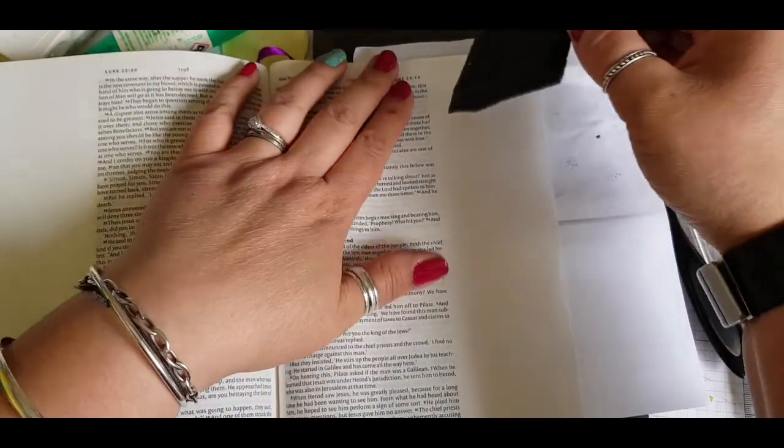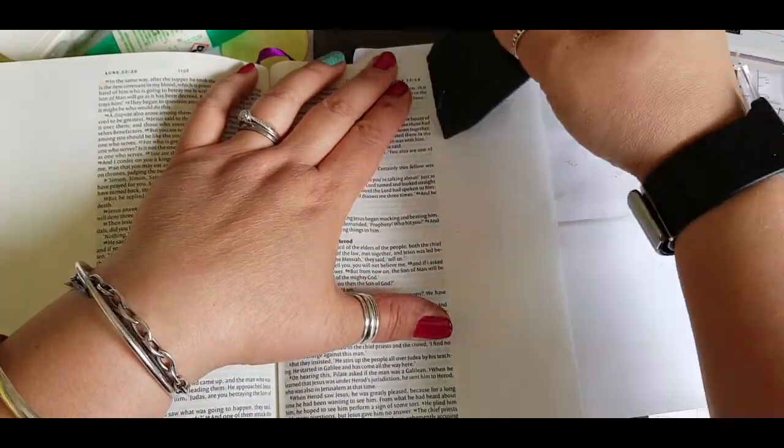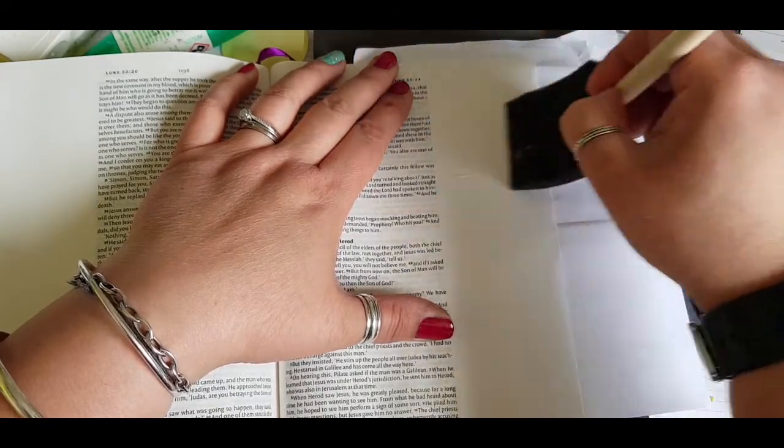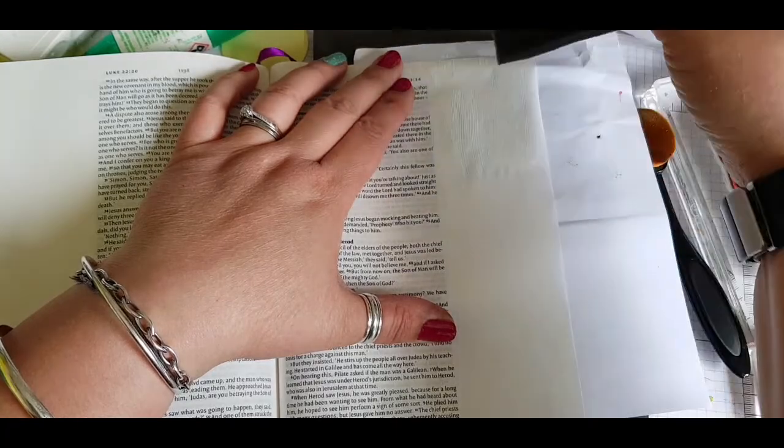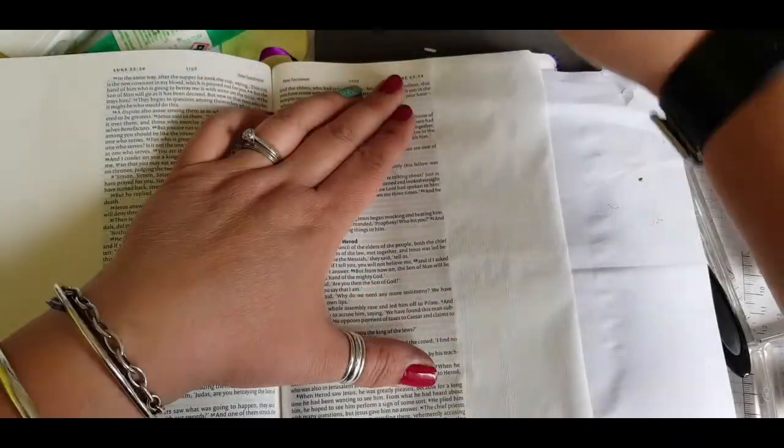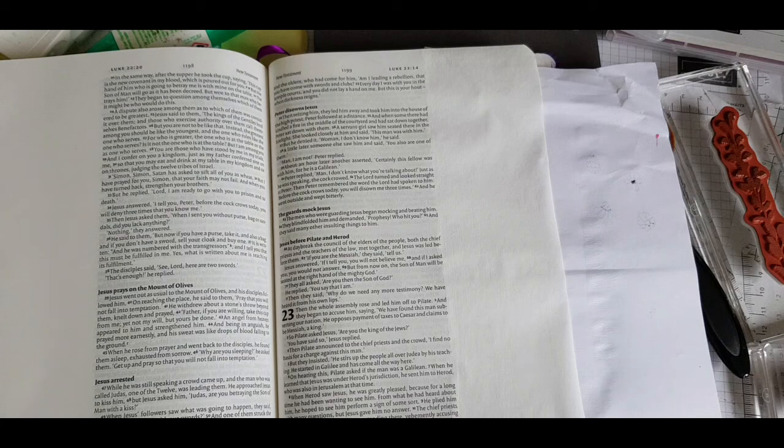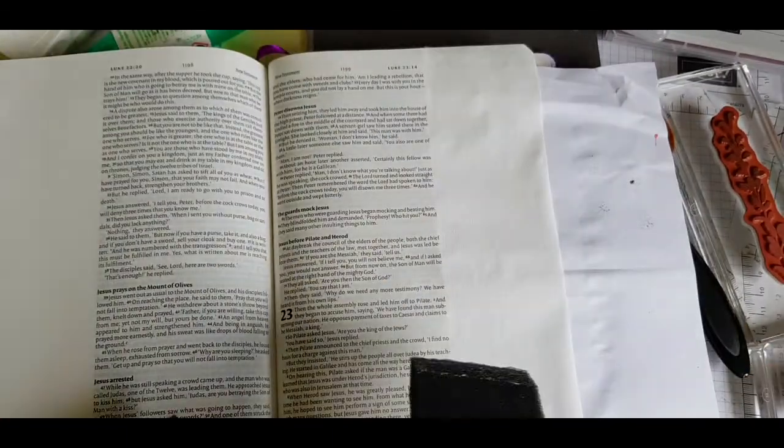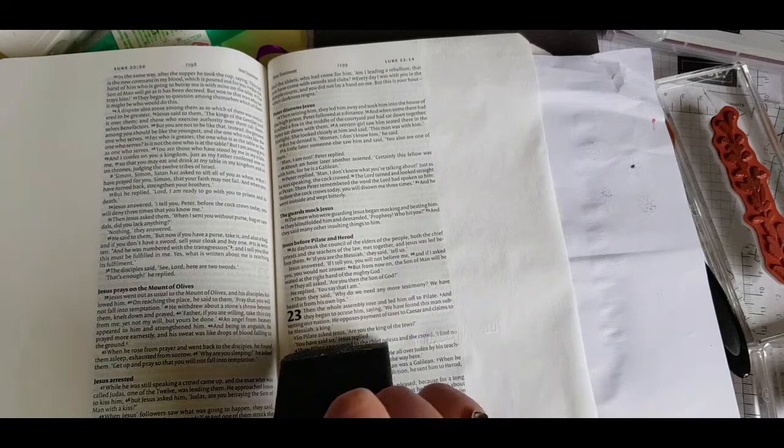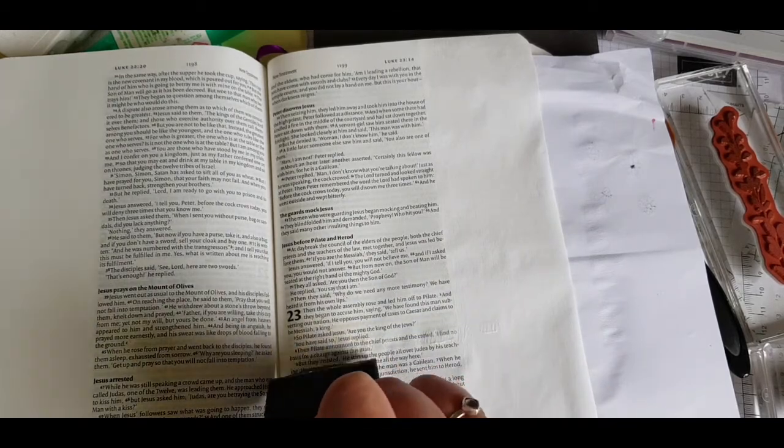So I squeeze an amount onto a sponge brush—these are very cheap, you can pick them up online quite easily—and just squirting along the edge and then just pasting it onto my page, going in up and down and then sideways motion, and then just drawing the gesso back down the page so I've got a fairly smooth surface. It does have a rough texture to it.